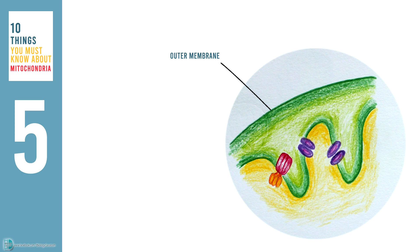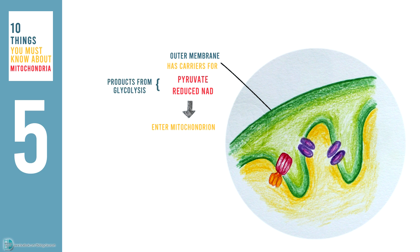The outer membrane of a mitochondrion has carriers for pyruvate and reduced NAD. This allows those products from glycolysis to enter the mitochondrion and take part in the Krebs cycle and oxidative phosphorylation.